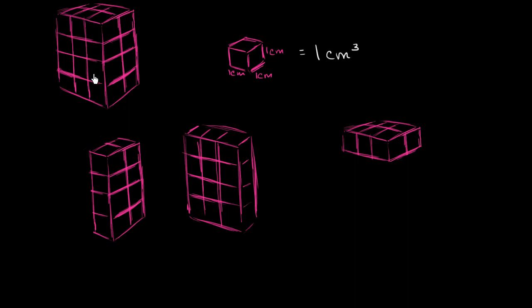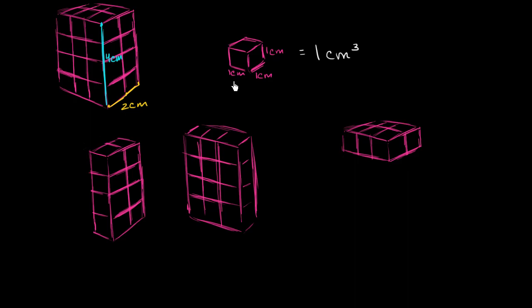We can figure out the volume by counting how many cubic centimeters can fit into this figure without overlapping. If we had it in our hands, we could try to count, but it's hard because some cubes are hidden behind others. So let's think about what we can observe. This figure is 2 centimeters wide, 4 centimeters high, and 3 centimeters deep. I want to explore if we can use these numbers to figure out how many cubic centimeters fit inside.